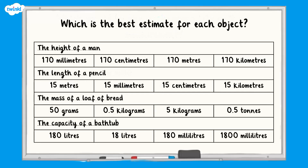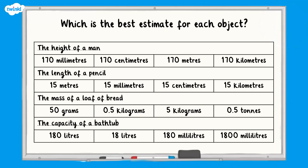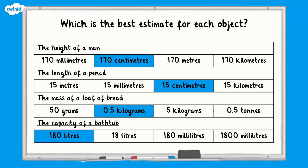Now I think you are ready for another challenge. Pause the video and have a go — which is the best estimate for each object? A good estimate for the height of a man would be 170 centimetres. For the length of a pencil, it would be 15 centimetres. The mass of a loaf of bread would be approximately 0.5 kilograms, which is the same as 500 grams. The capacity of a bathtub is approximately 180 litres.